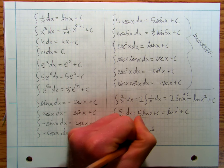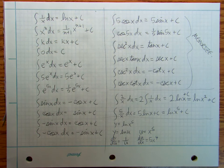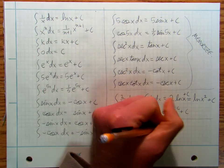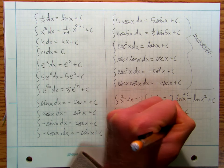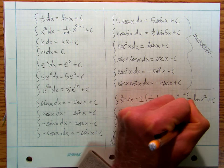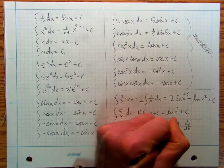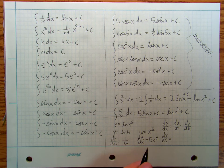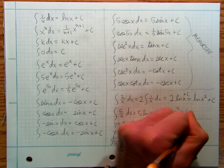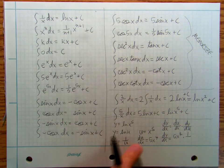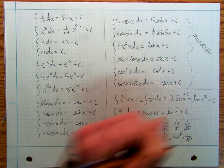I'm going to say dy/du is equal to 1 over u, and du/dx is equal to 5x to the fourth. Then I'm going to say dy/dx is equal to dy/du times du/dx.